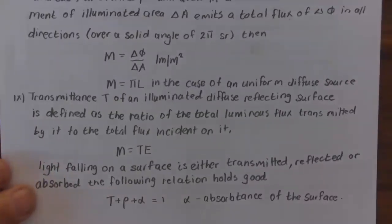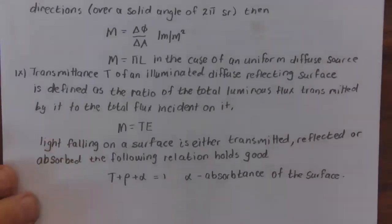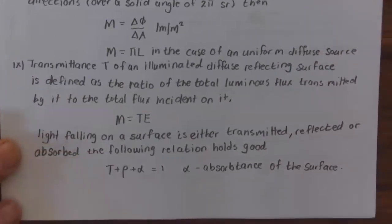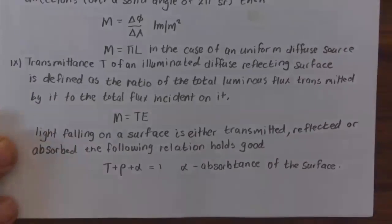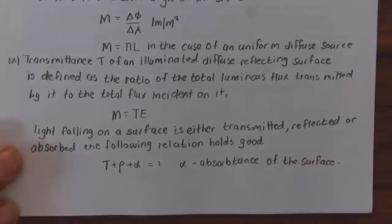Transmittance T of an illuminated diffuse reflecting surface is defined as the ratio of the total luminous flux transmitted by it to the total flux incident on it; M = T·E. Light falling on a surface is either transmitted, reflected, or absorbed, and the following relation holds: T + ρ + α = 1, where α is the absorptance of the surface.